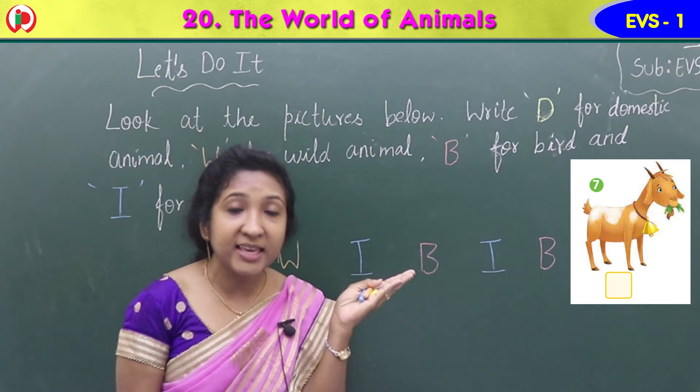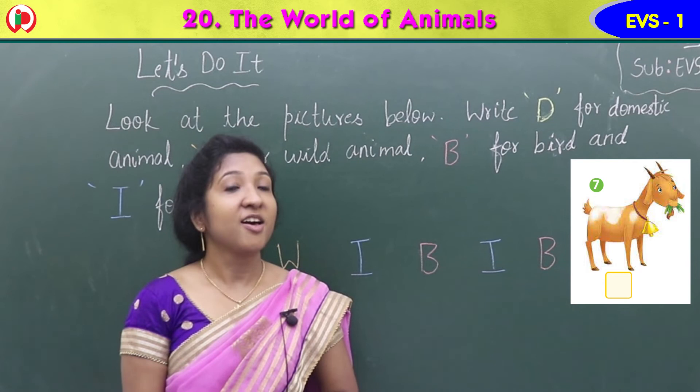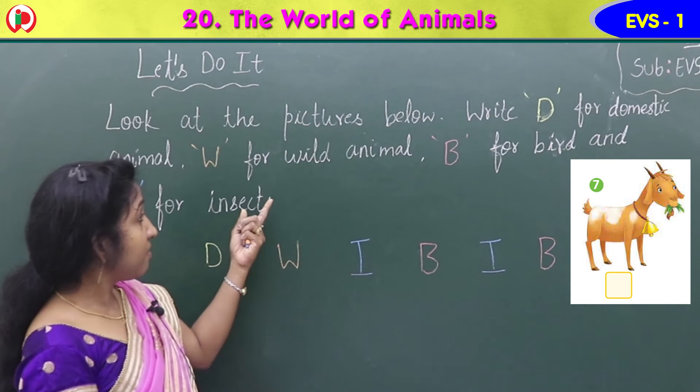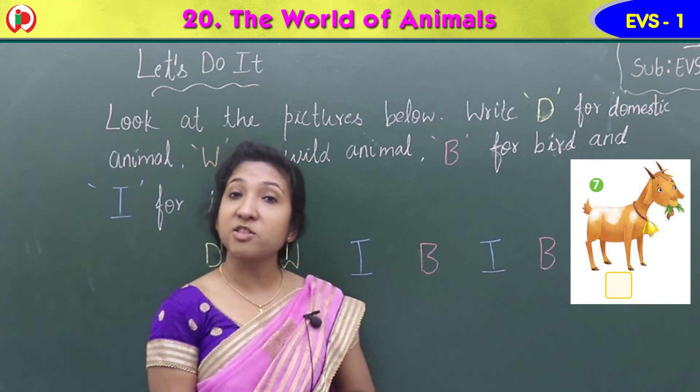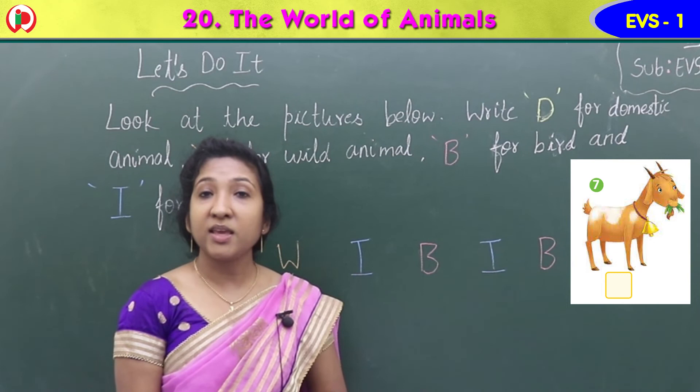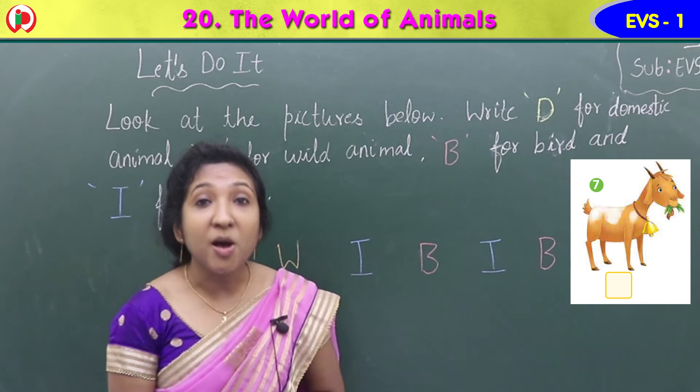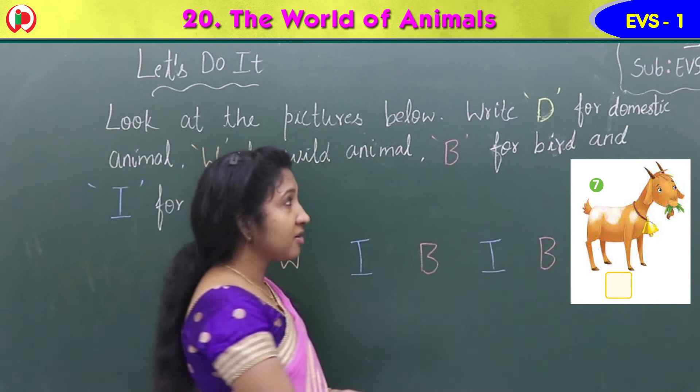Next, the seventh image — what can you see here? It is a goat. Is it a wild animal, domestic, bird, or insect? Goat is an animal which is useful to us; it gives us meat. We keep them on the farm. It is a domestic animal, so you can write D.